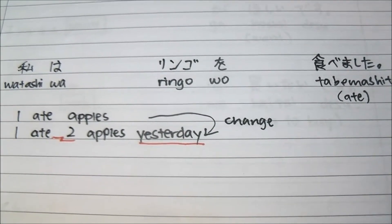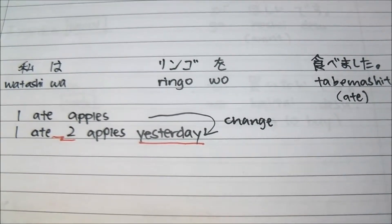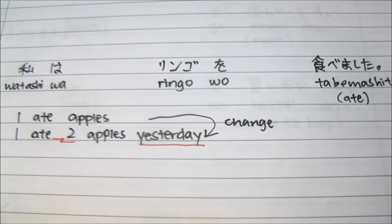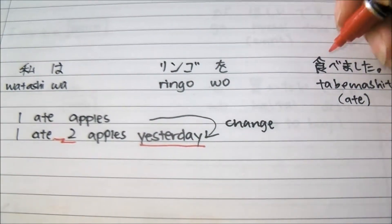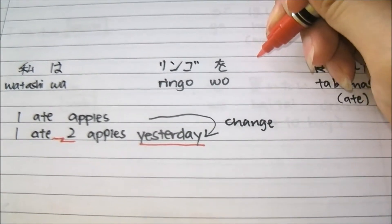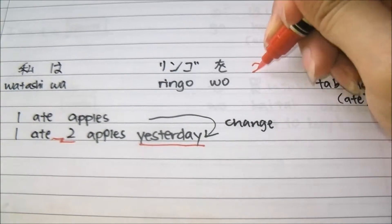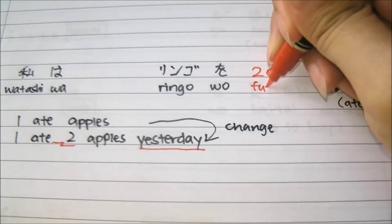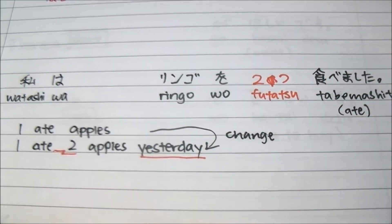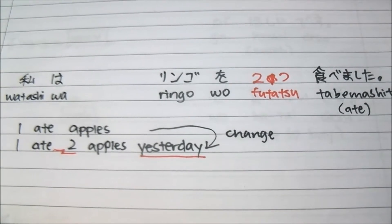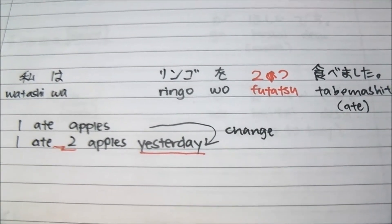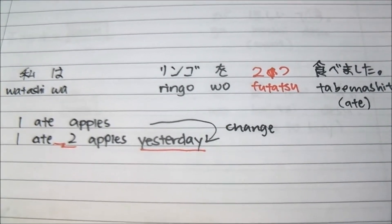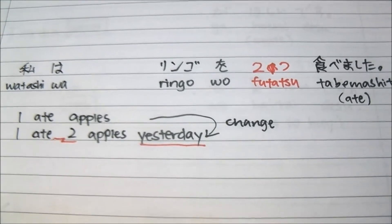So over here is a very important sentence structure. For two apples, we usually add the number in front of the verb. So 'two' will be 'futatsu'. 'Futatsu' is actually a counter for something that is small, like apples. A lot of things can be used with it — in Chinese, it's like 'ge'. It's very widely used.